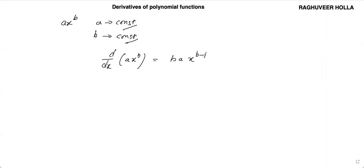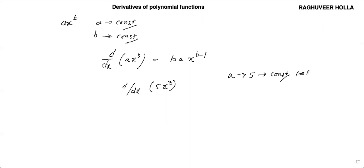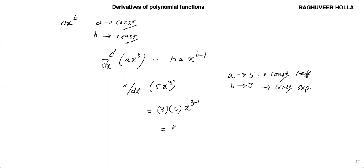Let us look at a few examples. So d by dx of 5x cubed: here a is 5, which is the constant coefficient, and b is 3, which is the constant exponent. So this is 3 into 5·x to the power of 3 minus 1, which is 15x squared.